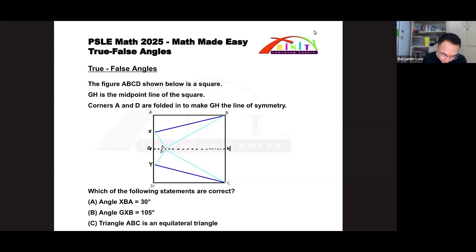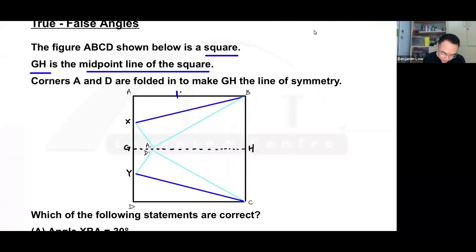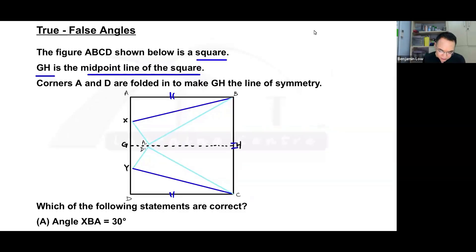It says here that the figure below is a square. This is critically important. And it says that GH is the midpoint line of the square. So two things. Number one, this is a square. If this is a square, it means that this side equals this side equals this side and so on. Alright, four sides. And then it says that corner A and D are folded in to make GH the line of symmetry.